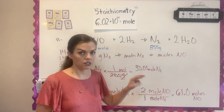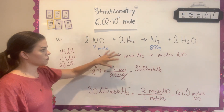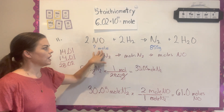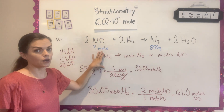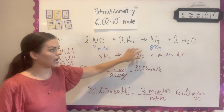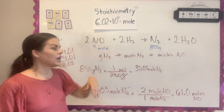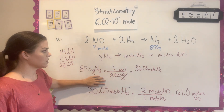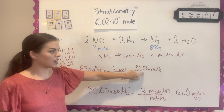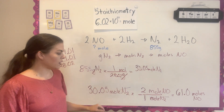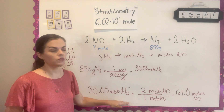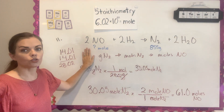We keep 3 significant figures because we started with 3 significant figures. To recap: given grams of nitrogen and asked for moles of NO, I cannot go directly from grams to moles across the equation. I must first convert the nitrogen to moles, then use the balanced chemical equation ratio to find how many moles of NO are needed.